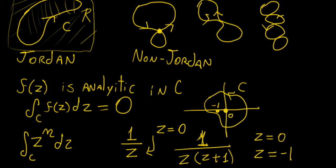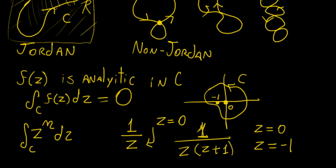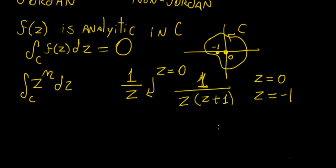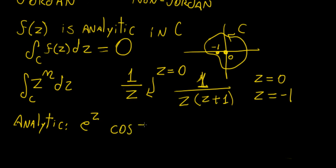Anything enclosed by the curve that is a singularity defines a non-analytic function within that curve. This is a really important definition because it allows us to simplify integration. Examples of analytic functions include: e to the power of z, cosine of z, sine of z, z to the power of n, and polynomial functions of z. All of these are analytic because you can put essentially any value of z and get a well-defined value.